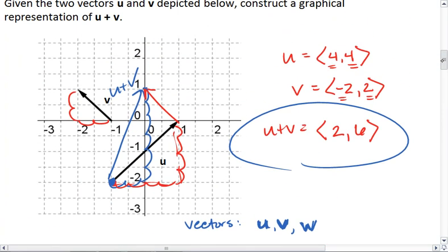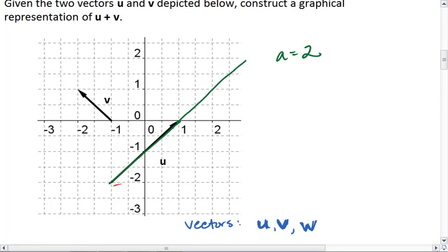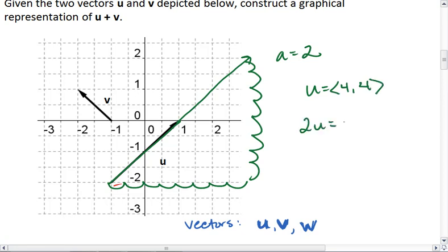For example, if we were to double the vector u that we see on the screen, so if our scalar was 2, we would then go twice, which gives us 1, 2, 3, 4, 5, 6, 7, 8. So u, which is usually 4 by 4, 2u becomes 8, 8.